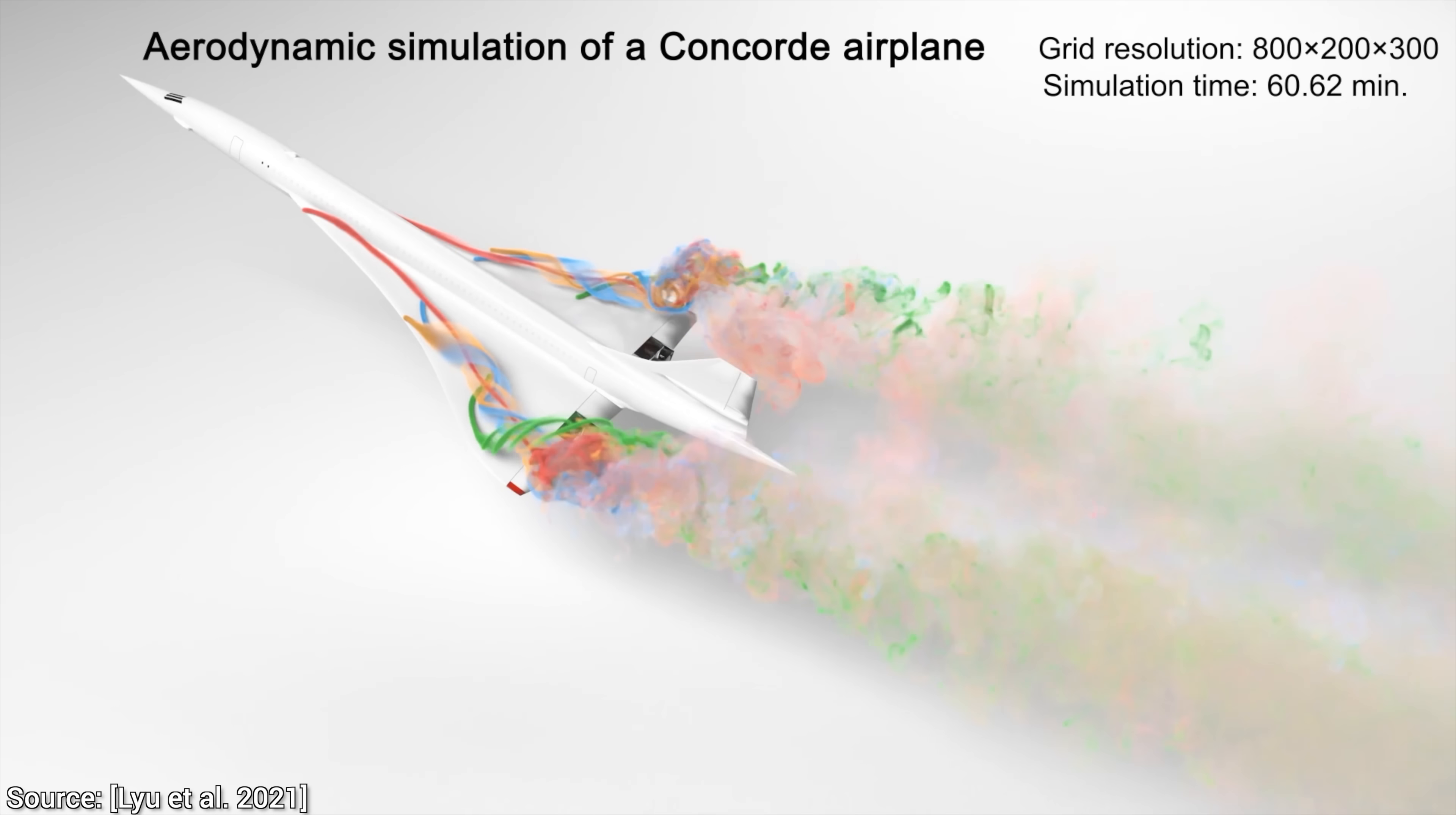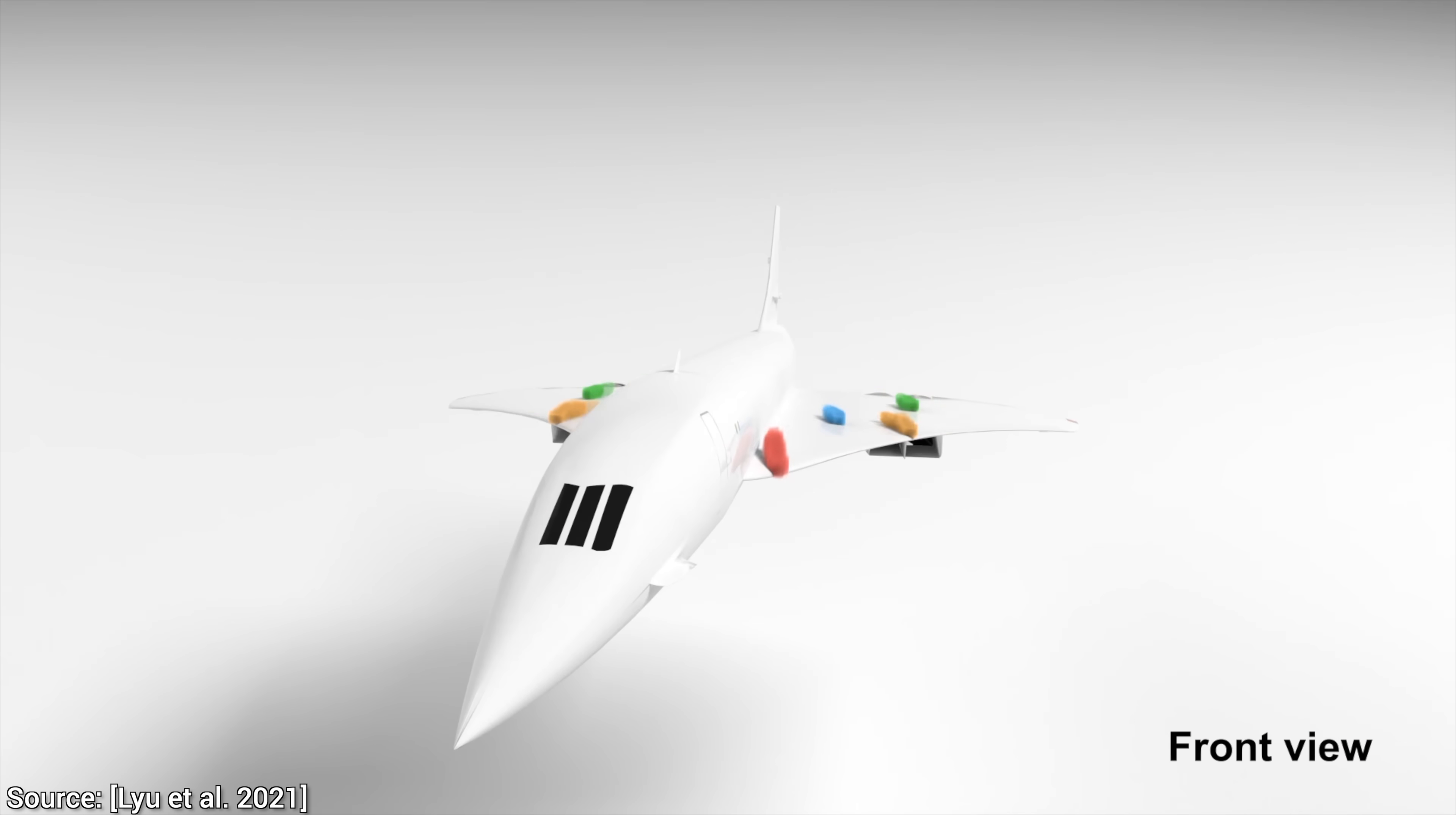And within these 60 minutes, the same spiral vortices show up as the ones in the real wind tunnel tests. So good! But really, how can this be so fast? How is this even possible?